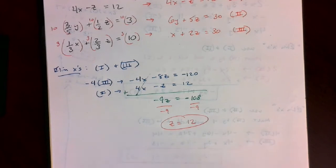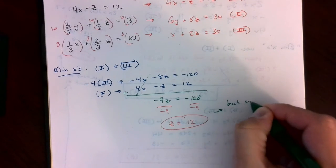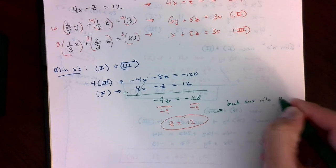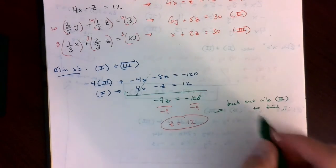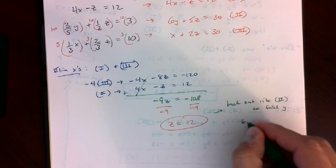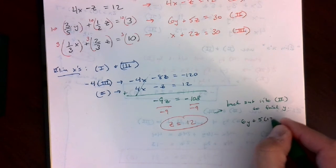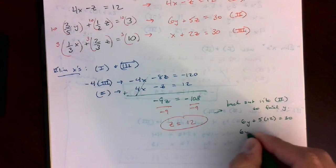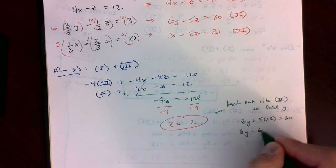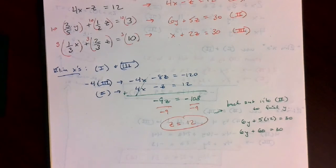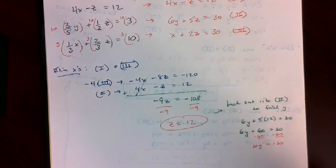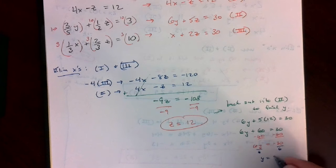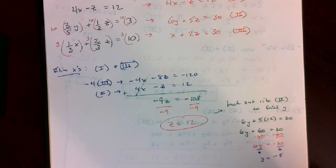Let's back substitute into equation 2 to find y. It's the only one that has y in it and we have z now. So we have 6y plus 5 times 12 equals 30. This is 6y plus 60 equals 30. Subtracting 60 from each side, 6y equals negative 30. Dividing by 6, we get y equals negative 5.